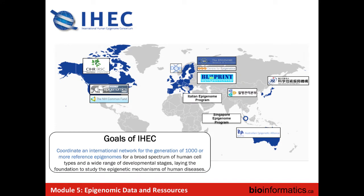One challenge with these experiments is that, in contrast to just regular DNA, you need to have access to the tissues. Profiling the normal brain is not easy in humans. Part of the challenge in this consortium is really having access to quality normal tissues to be able to do this profiling. The objective of the consortium is to gather a thousand reference epigenomes.